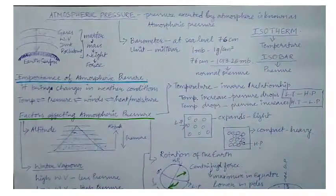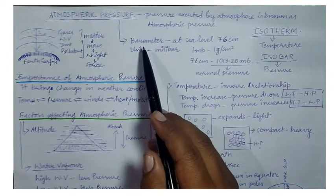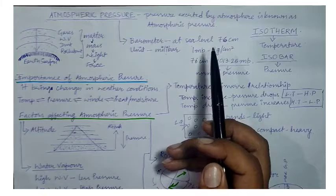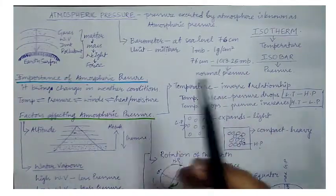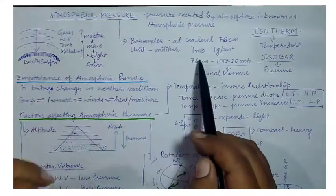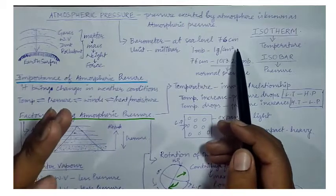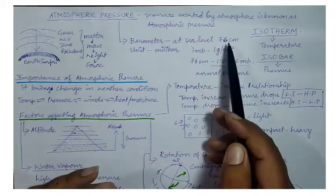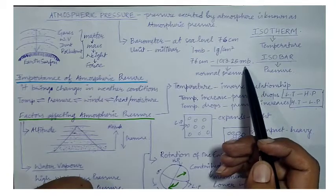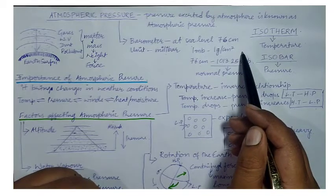Atmospheric pressure is measured by an instrument called a barometer. It shows that the weight of the column of air at sea level is 76 centimeters. Meteorologists use a unit called millibar to measure atmospheric pressure. One millibar equals one gram per centimeter square, making 76 centimeters equal to 1013.25 millibars at sea level, which is considered the normal pressure level.